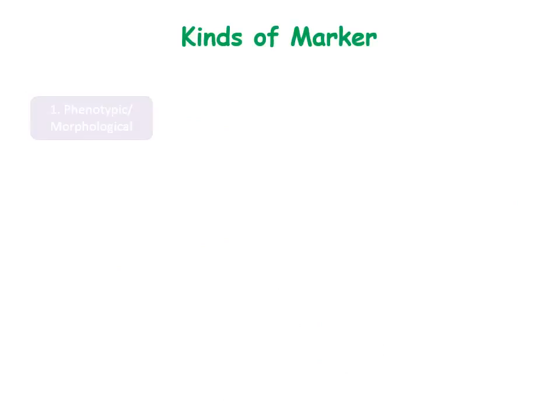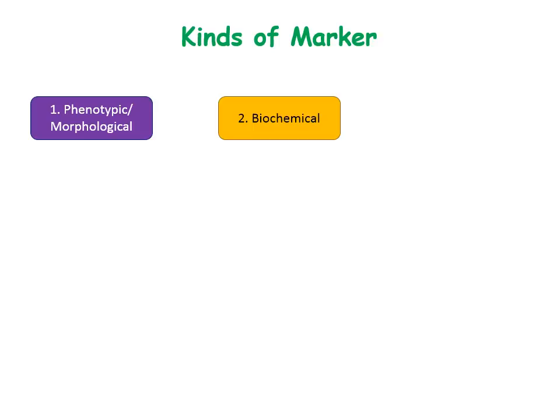Markers can be classified into three main types: phenotypic markers or morphological markers, which are the first generation of markers; biochemical markers, which are the second generation; and genetic markers, which are the third generation of markers.